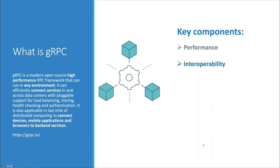For interoperability, gRPC is not just a framework but provides a set of tools and libraries for all major programming languages, including .NET, Java, Node.js, Python, and Go. Streaming is also natively supported as part of the framework, with full bidirectional streaming communication that can operate across load balancers and service clusters.